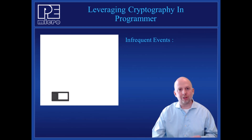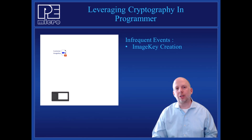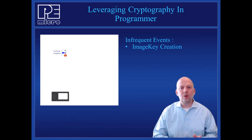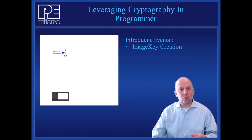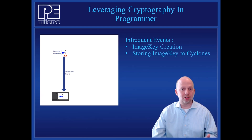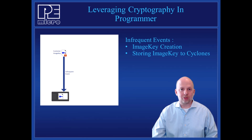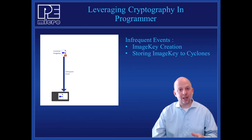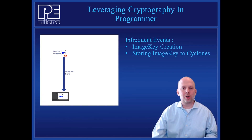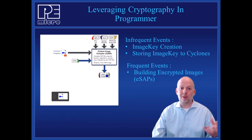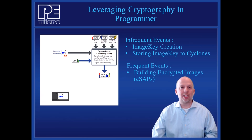The first thing that happens — and it's a relatively infrequent thing — is to generate an image key. An image key is actually a collection of different keys that have different functions while encrypting the standalone programming image. This image key file has two major functions. One is it can be installed into Cyclones; when installed, any production programming image encrypted with that key can be decrypted. If a Cyclone doesn't have the key, it cannot decrypt one of these secure images. Generating keys and installing them to Cyclones is an infrequent operation. The common operation is to generate standalone programming images while specifying that image key as one of the inputs.